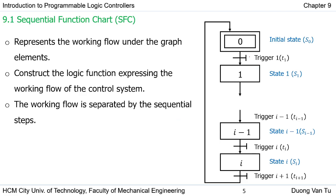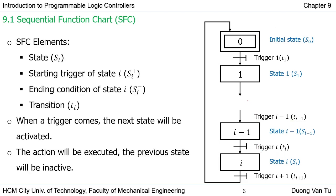In general, the first step is step zero, the initial step, denoted S0. From step zero we switch to step one by passing trigger one or transition one, and so on. To activate step I we have to pass trigger I-minus-one, and to switch to the next step we pass trigger I or transition I. Remember that at any moment only one step is active at a time.